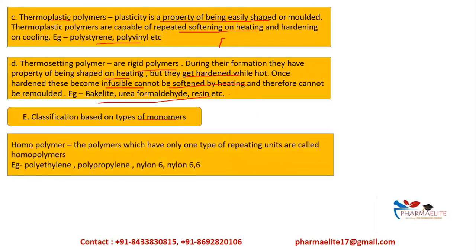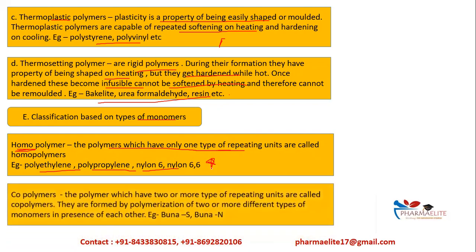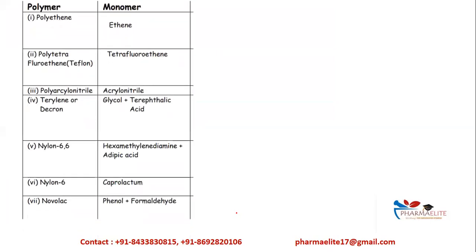The next classification is based on the type of monomers present. Homopolymers have only one type of repeating unit continuously present — examples include polyethylene, polypropylene, nylon 6, and nylon 6,6. Copolymers have two or more types of repeating units joined in a particular sequence — examples are Buna-S and Buna-N.